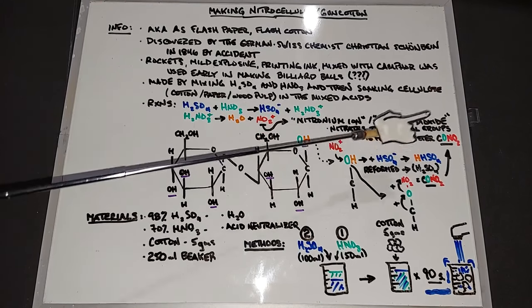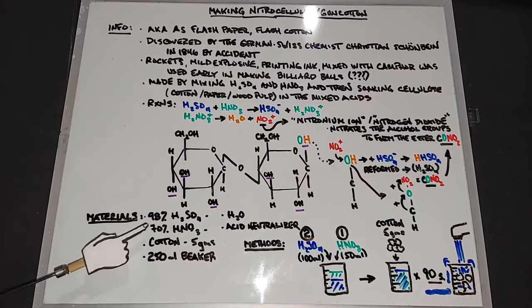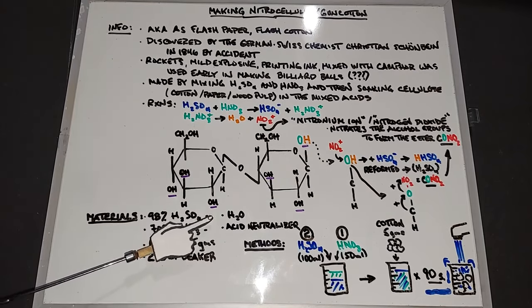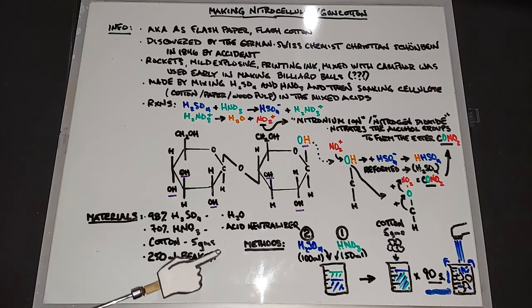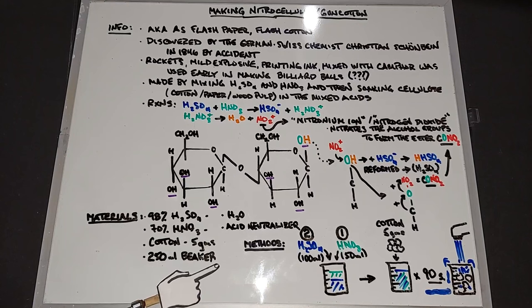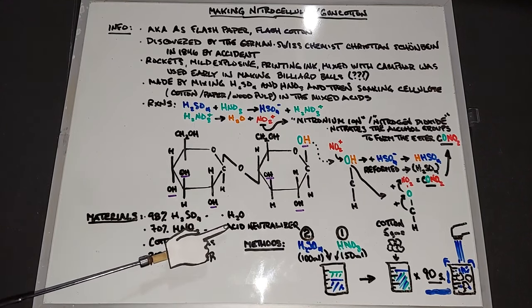The materials we need: 98 percent H2SO4 sulfuric acid, 70 percent HNO3 nitric acid, cotton starting with five grams, a 250 milliliter beaker, water at the end to wash out the acids, or use an acid neutralizer which could be sodium bicarbonate, sodium carbonate, or even sodium hydroxide.